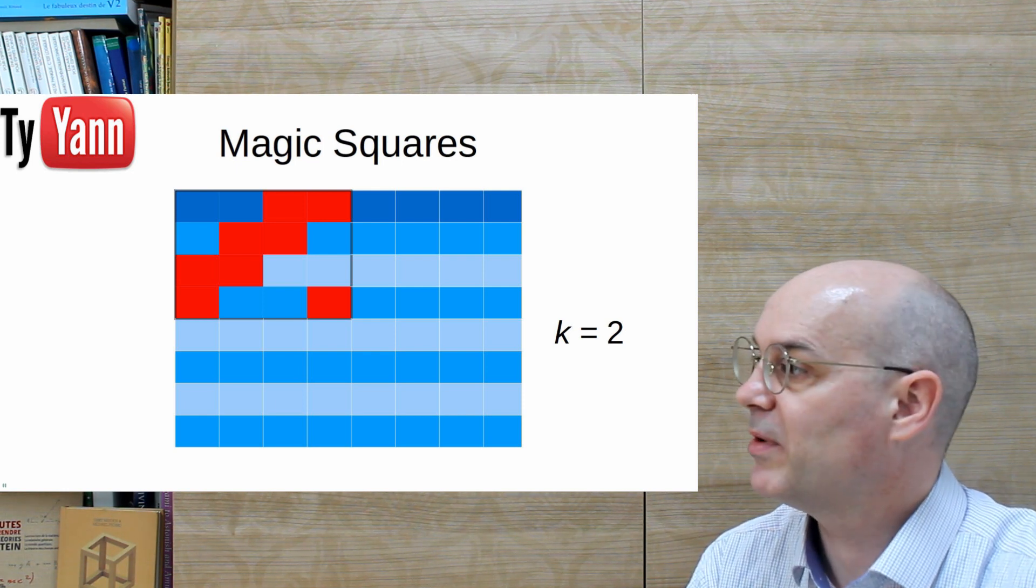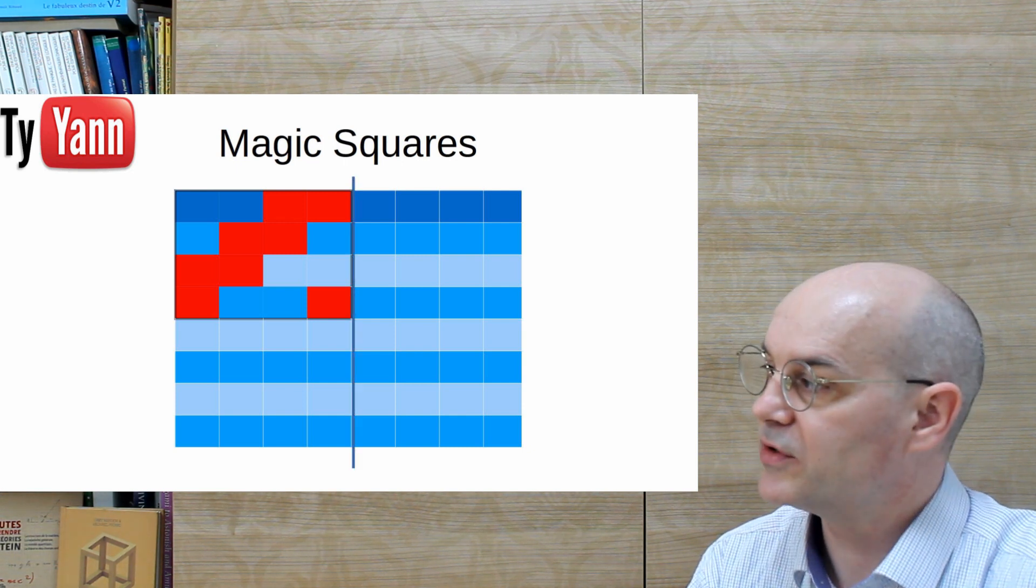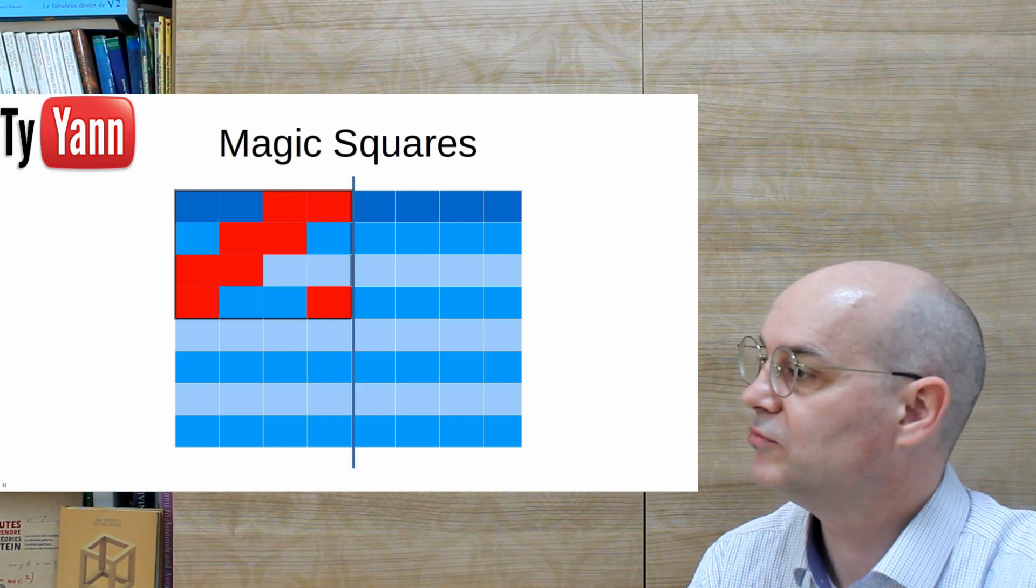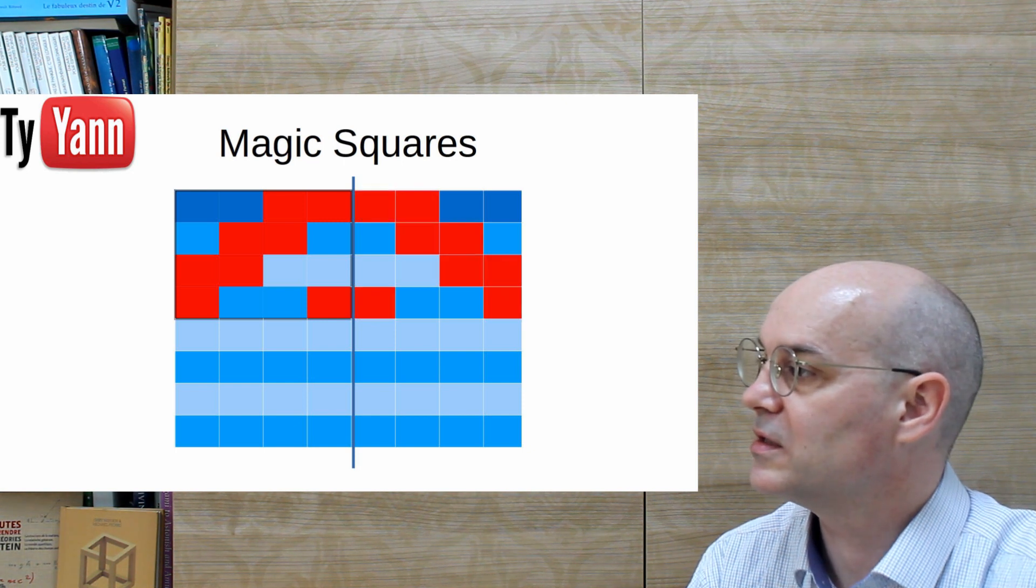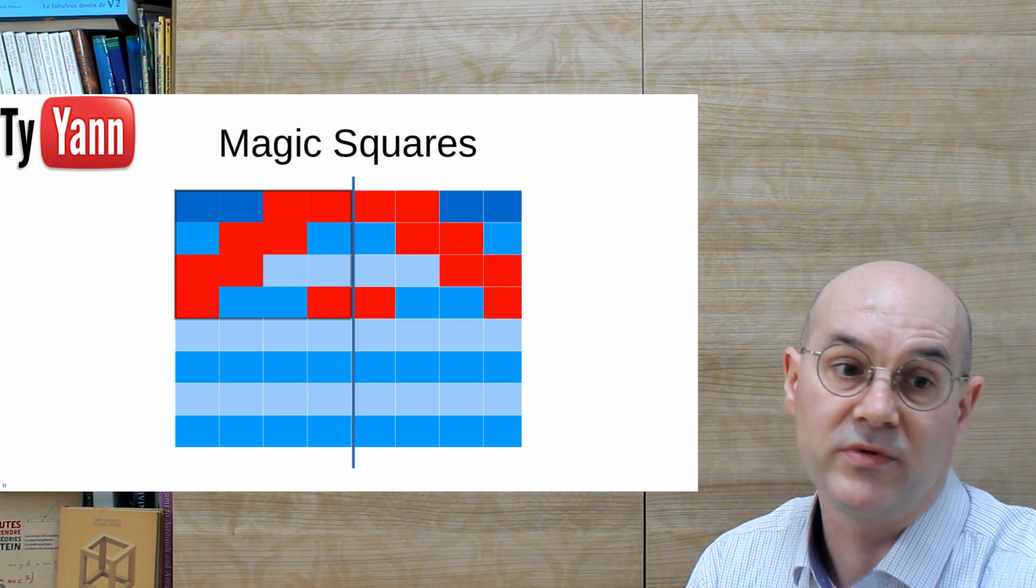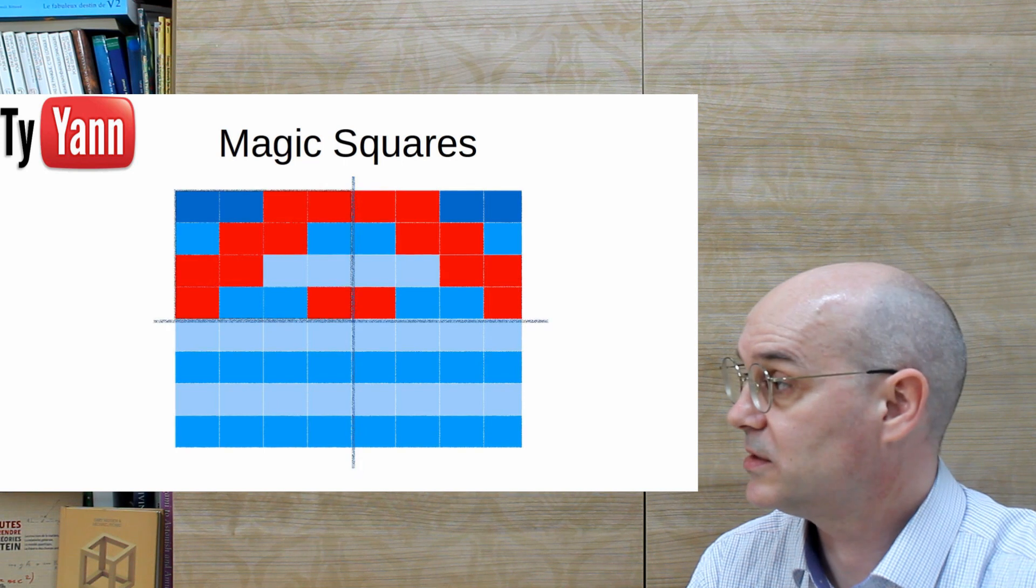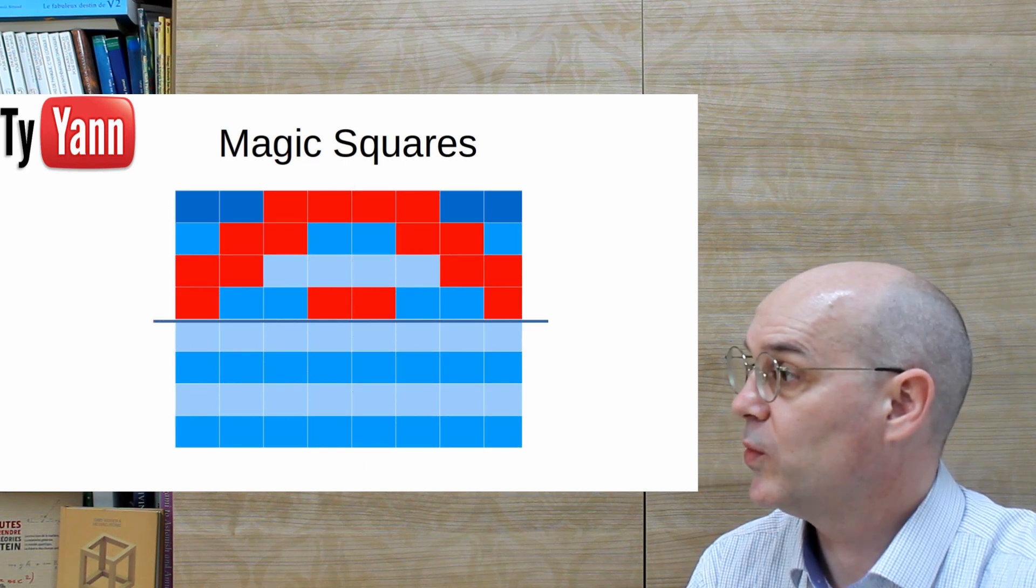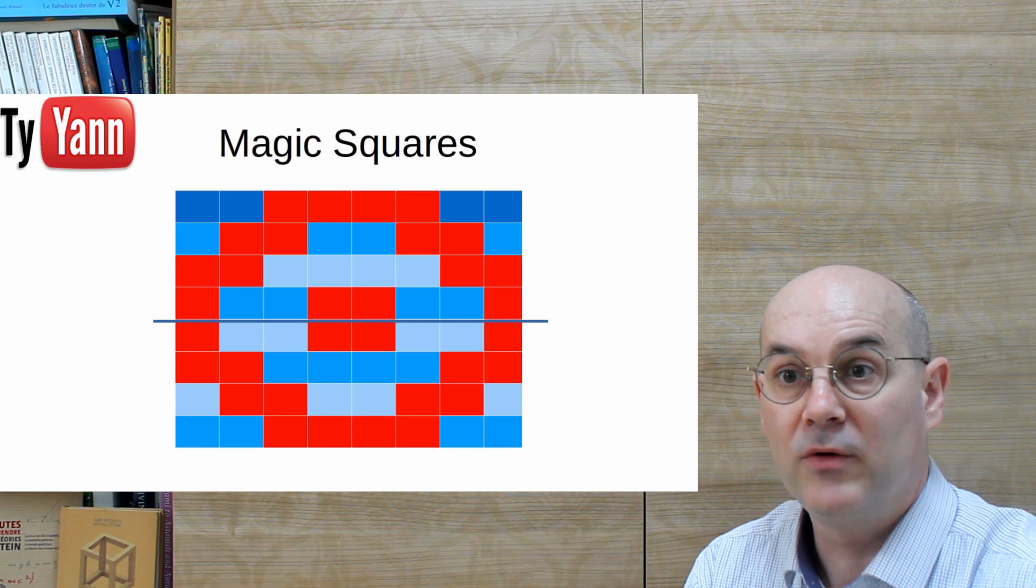And if you remember, we mirror it vertically, with a vertical axis. And then we mirror it with a horizontal axis, like so. And we're done.